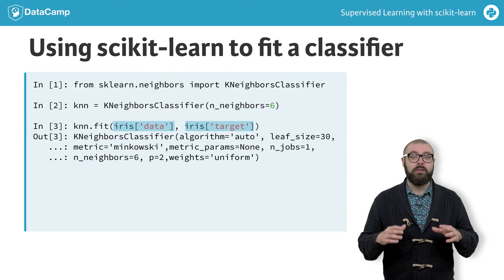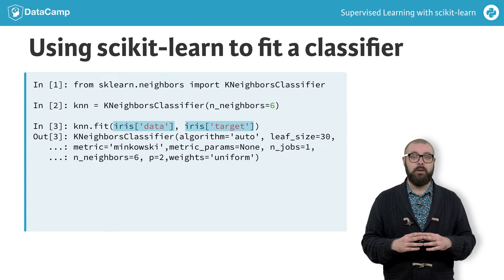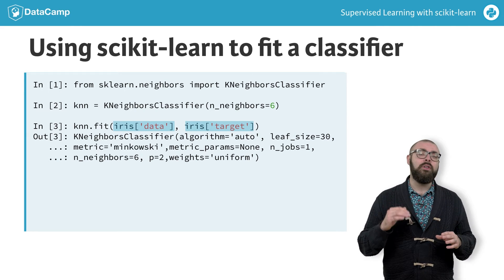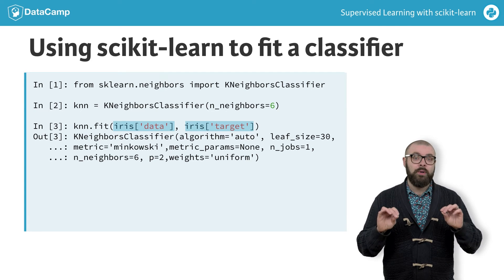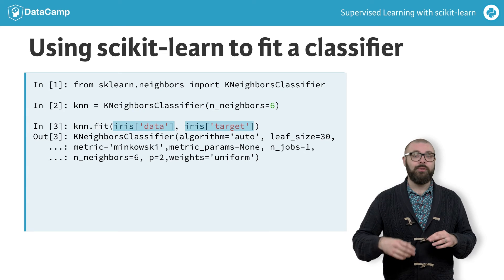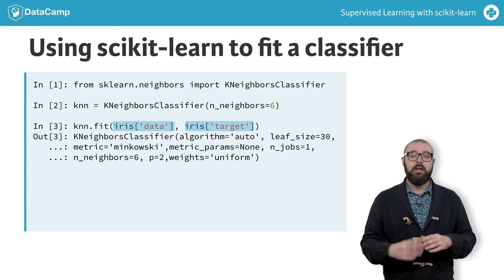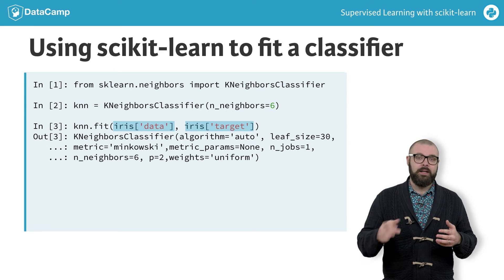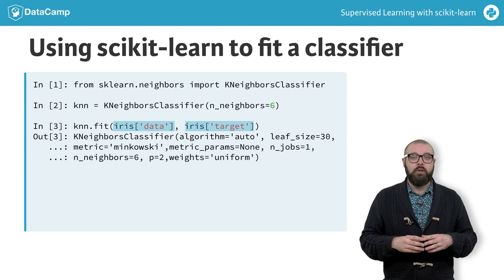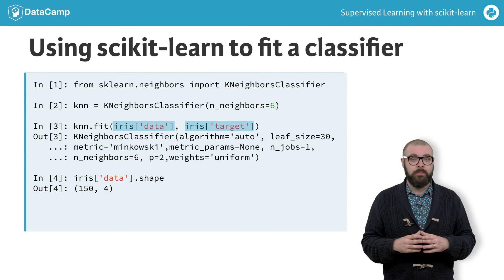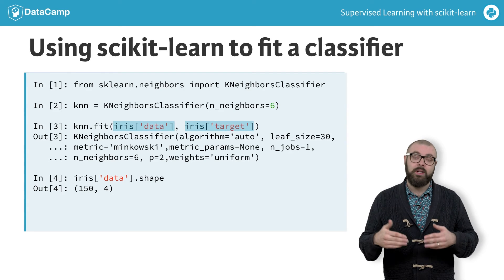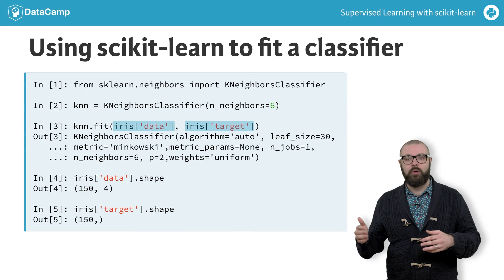The scikit-learn API requires that you have the data as a numpy array or pandas DataFrame. It also requires that the features take on continuous values, such as the price of a house, as opposed to categories such as male or female. It also requires that there are no missing values in the data. Later in the course, you'll see how to deal with categorical features and missing data. The API requires that features are in an array where each column is a feature and each row is a different observation. Looking at the shape of the iris data, we see 150 observations of four features. Similarly, the target needs to be a single column with the same number of observations — in this case, 150 labels.